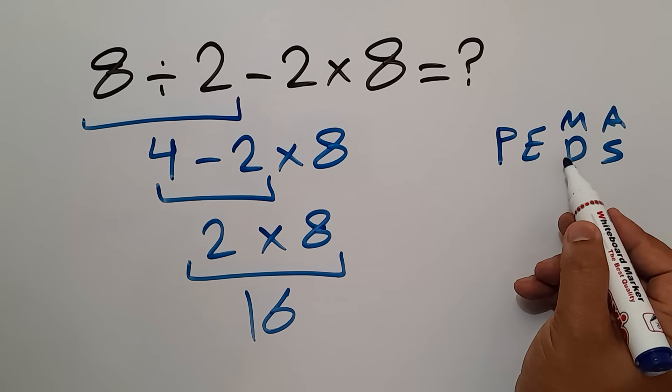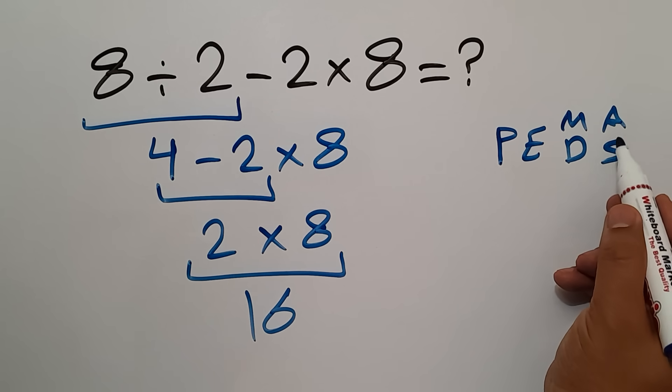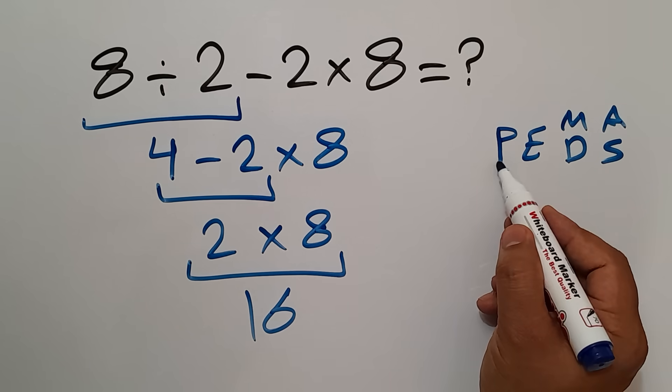And D stands for multiplication and division, and A and S stands for addition and subtraction. We first do parentheses.